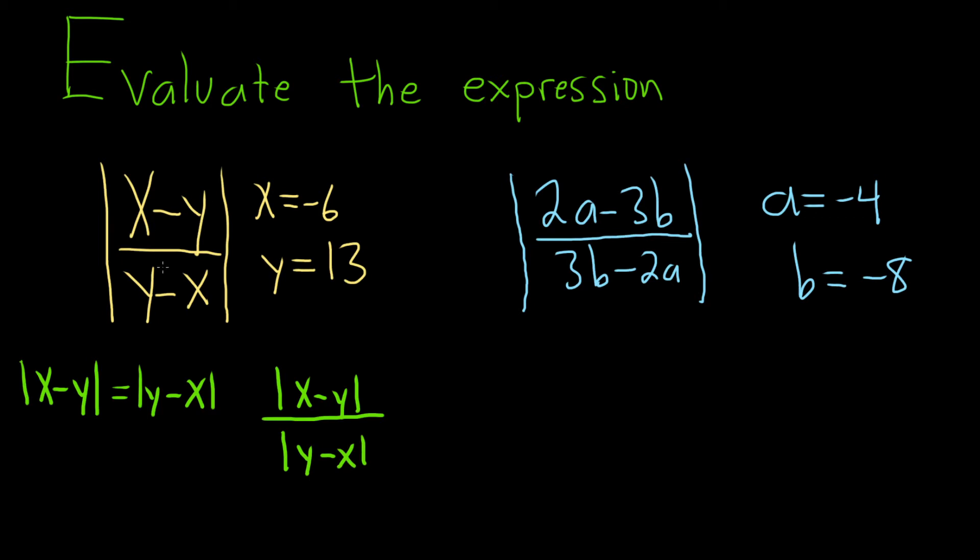Whenever you have the absolute value of a fraction, you just take the absolute value of each piece. Then we can switch the bottom piece, so we have the absolute value of x minus y over the absolute value of x minus y.